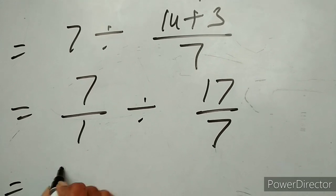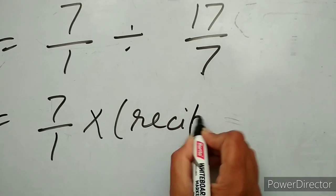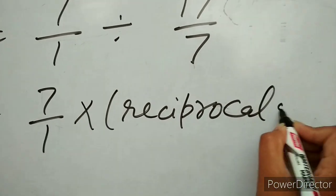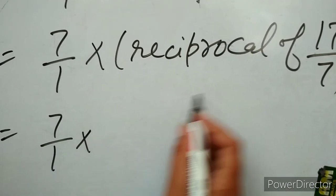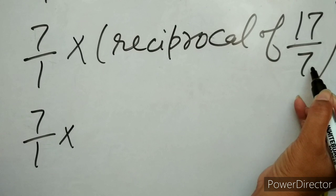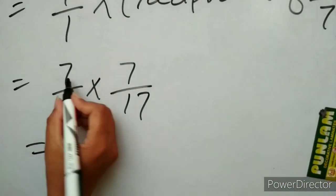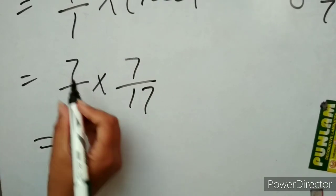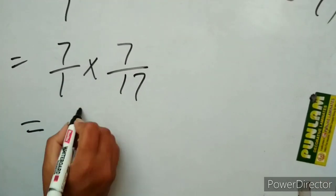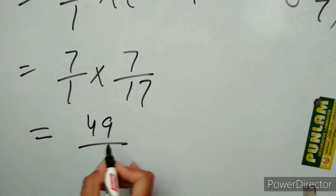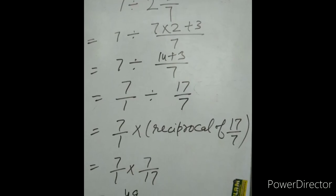So we have 7 upon 1 divided by 17 upon 7. We simply multiply by the reciprocal of 17 upon 7, which is 7 upon 17. Multiply numerator by numerator and denominator by denominator: 7 multiplied by 7 gives 49, and 1 multiplied by 17 gives 17. The answer is 49 upon 17. Thanks for watching — please like my video and subscribe to my channel.